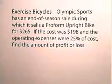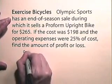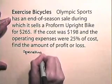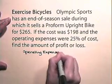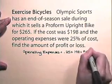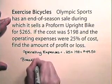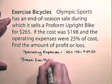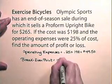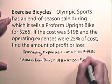Let's look at this example. Olympic Sports has an end-of-season sale during which it sells a pro form upright bike for $265. If the cost was $198 and the operating expenses were 25% of cost, find the amount of profit or loss. Let's first find the operating expenses, which were 25% of the cost, which is $49.50. So the break-even point will be the cost, $198, plus the operating expenses, which is $247.50.